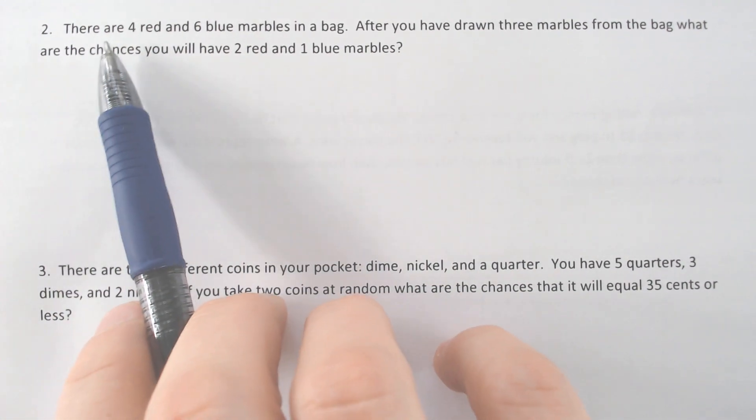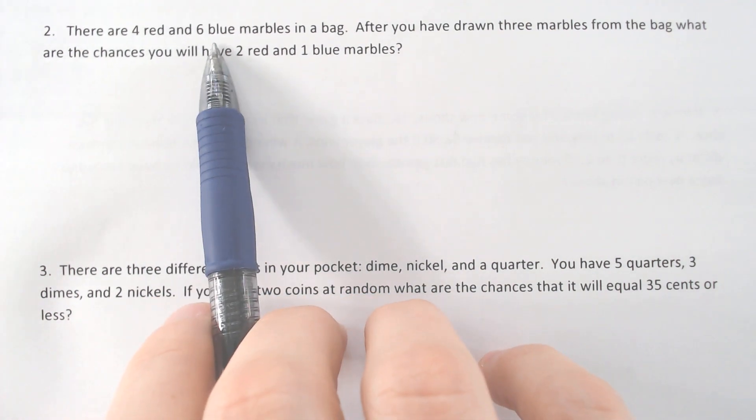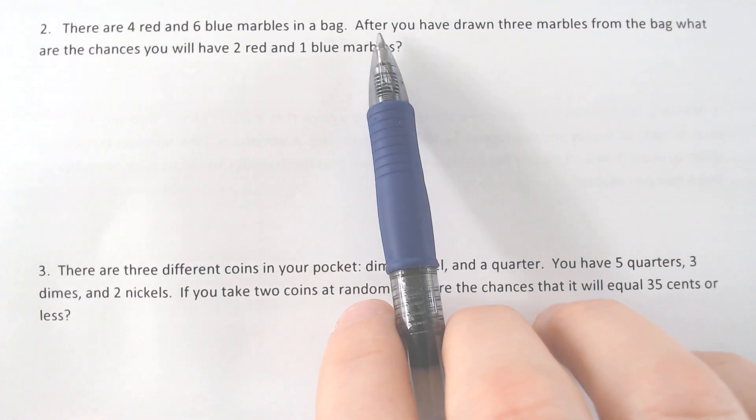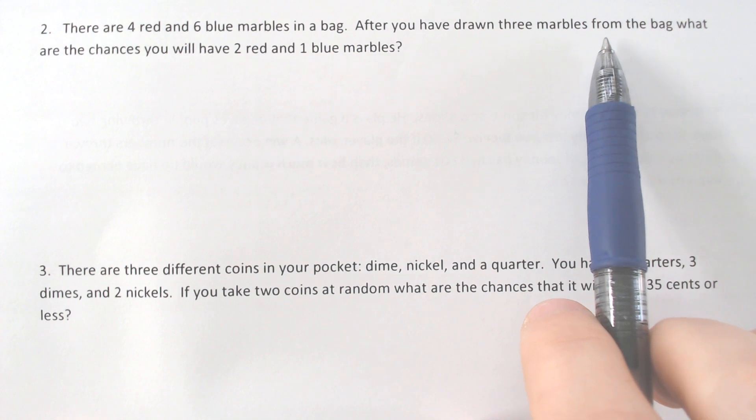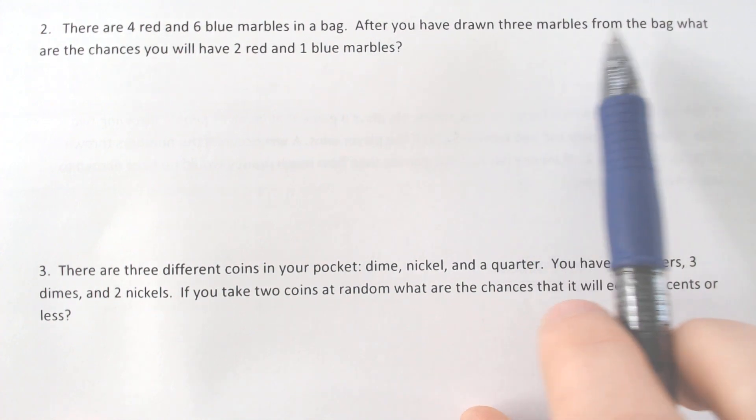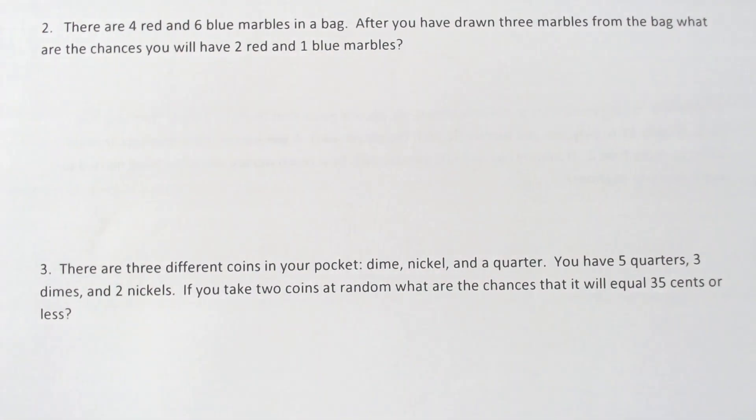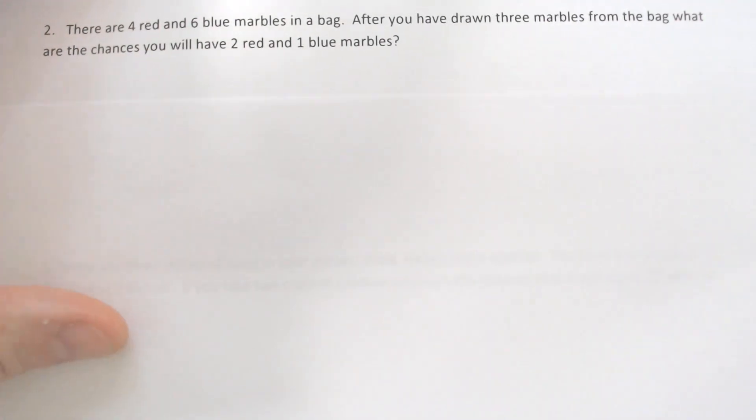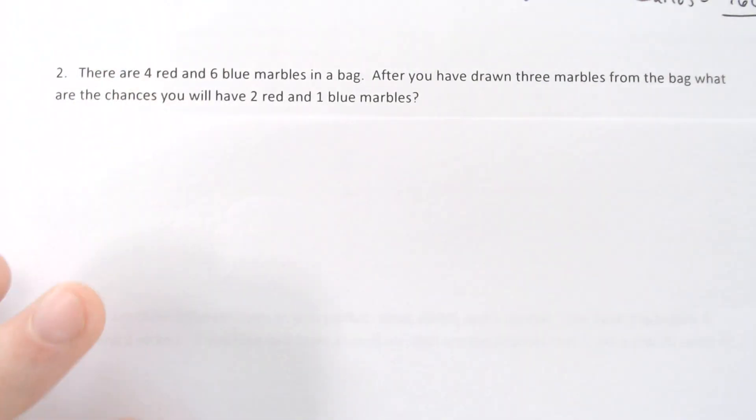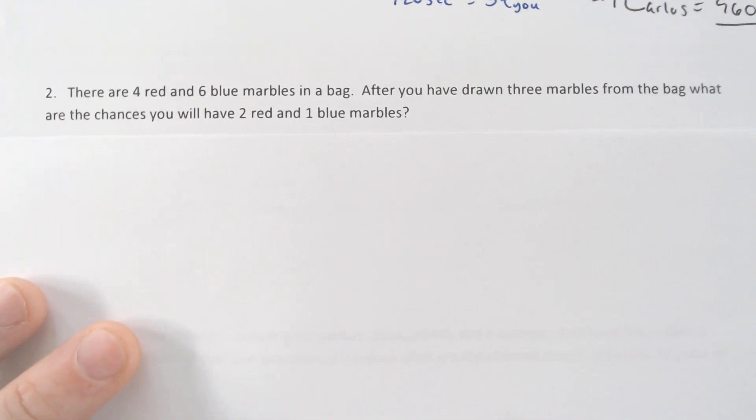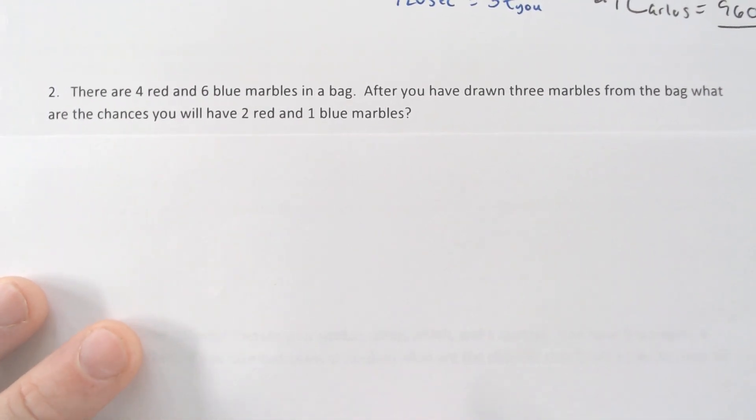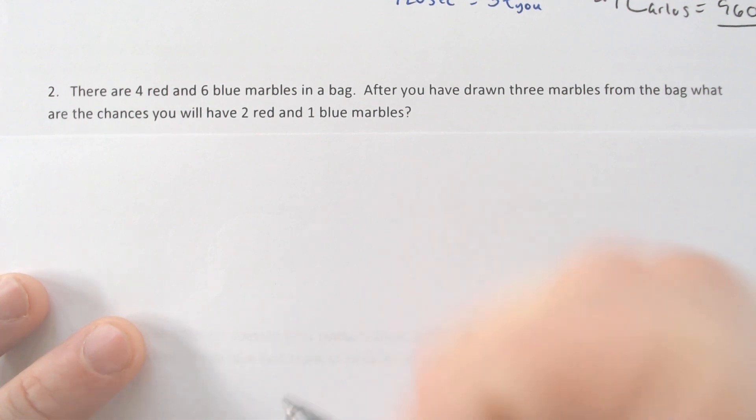So the marble question we got four red marbles and six blue in a bag. After you have drawn three marbles, that's always more annoying when you have to take more than one out, what are the chances that you'll have two red and one blue? In order to do this problem, you have to first recognize that there is a difference in order of events. It's not just what is the likelihood of you getting two red marbles and then a blue one in that order. However, it can be in any order.